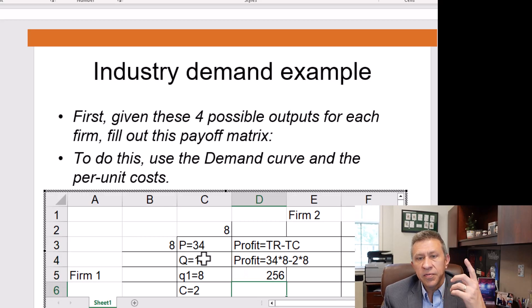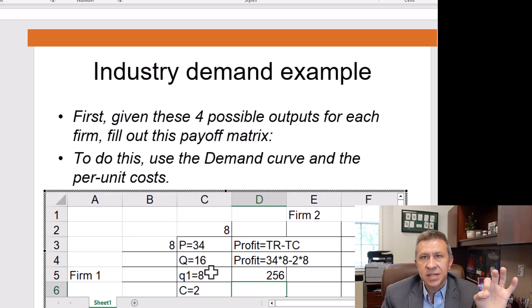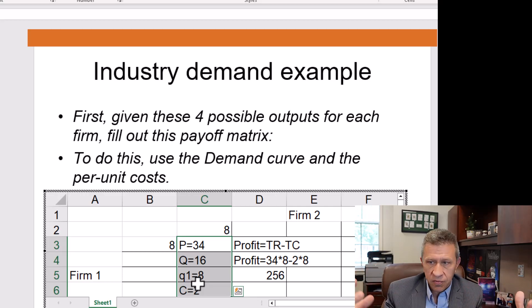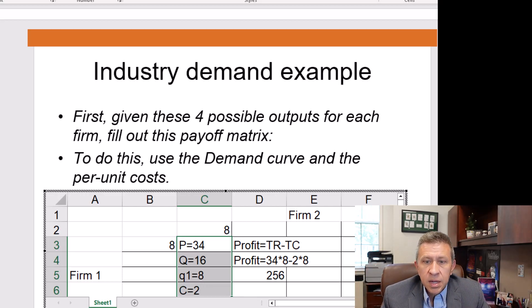And the profit is $256 for firm one, if both are producing eight units. It's also $256 for firm two, if both are producing eight units. So this does take a little time to fill them all out. I actually think this is a really useful exercise, especially if you're in the class, because it has you thinking about how these firms are making money, and what's the general profit formula.